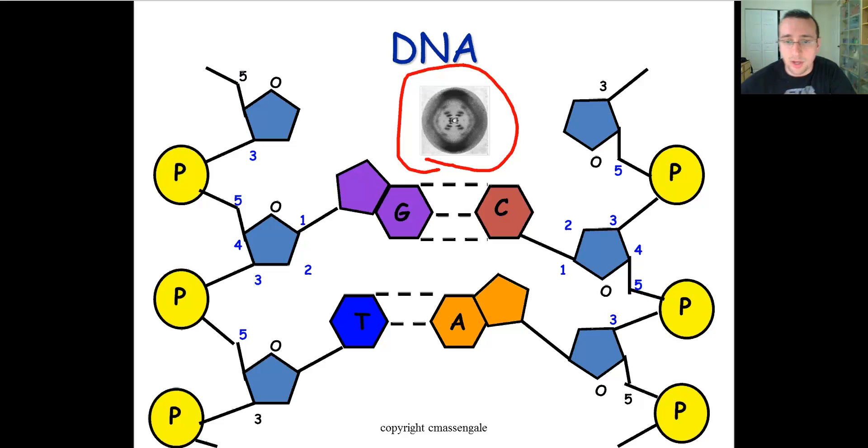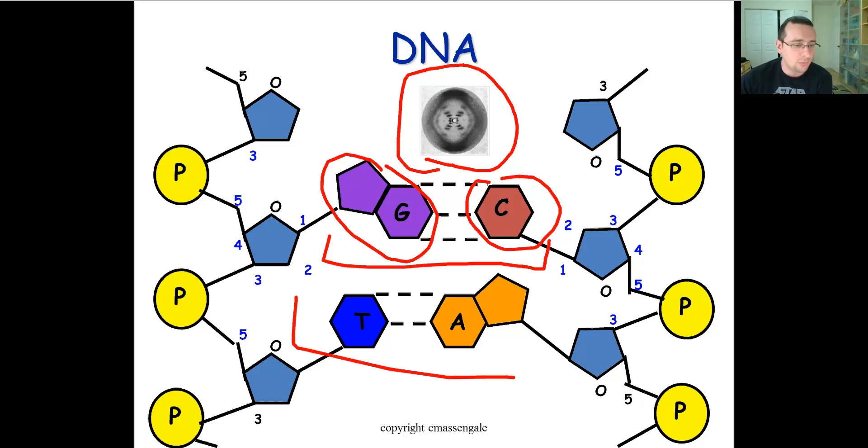Also, why is DNA always the same width, the 20 angstroms or 2 nanometers we talked about? If you look in the middle like we just spoke before, it's always a 2-ring purine bonded to a 1-ring pyrimidine. You see the same thing happen here. And therefore, it's always going to be 3 rings in the middle. And since you always have the 3 rings in the middle, the distance is always constant, always the same.